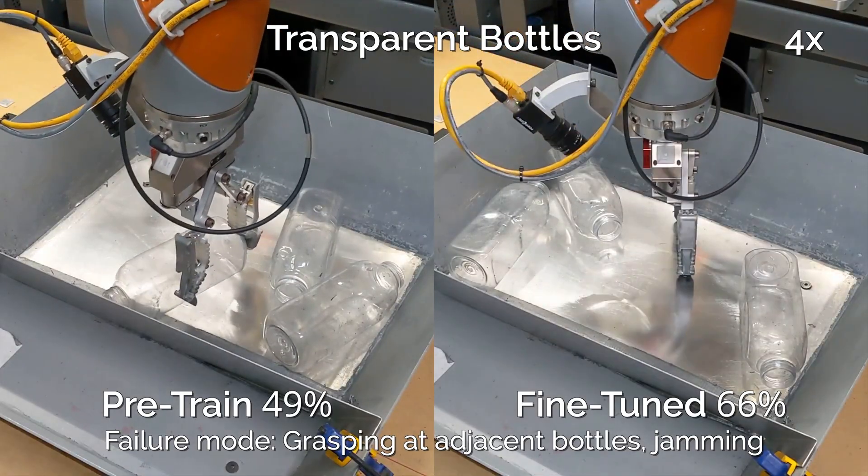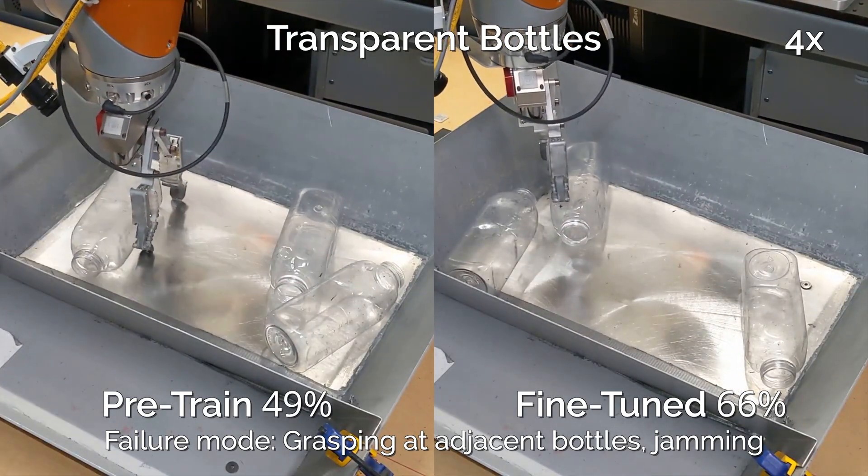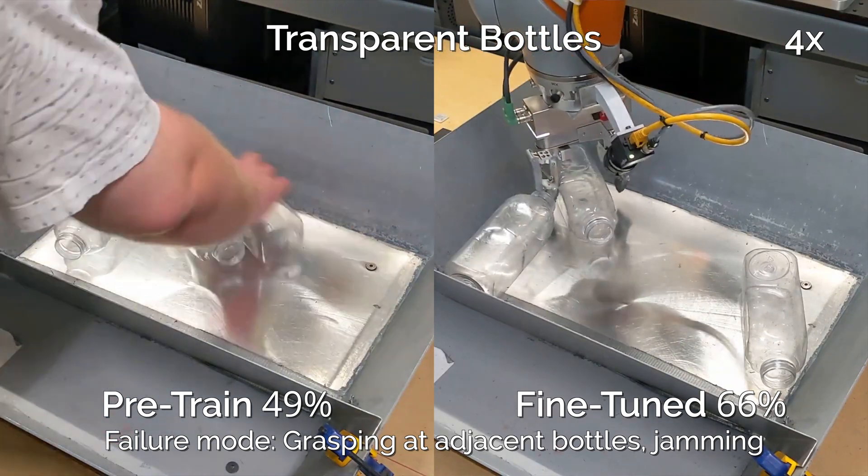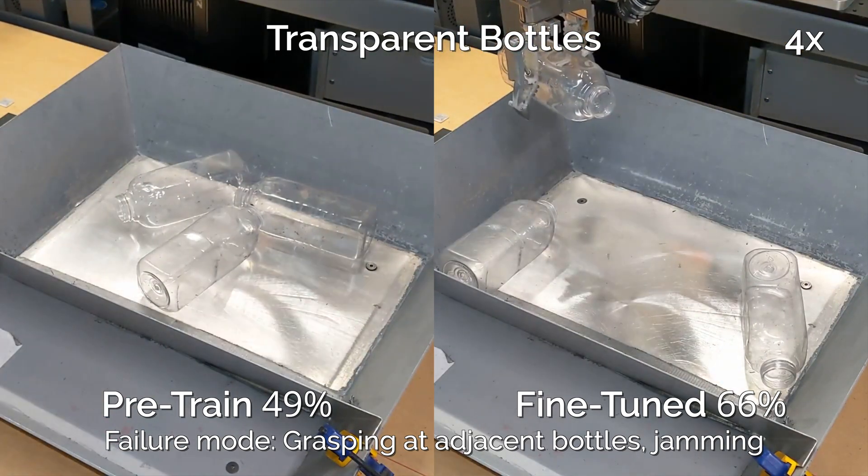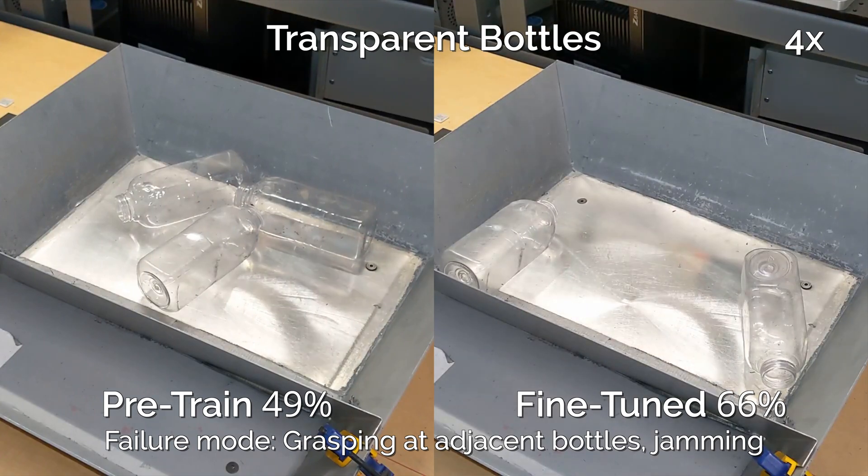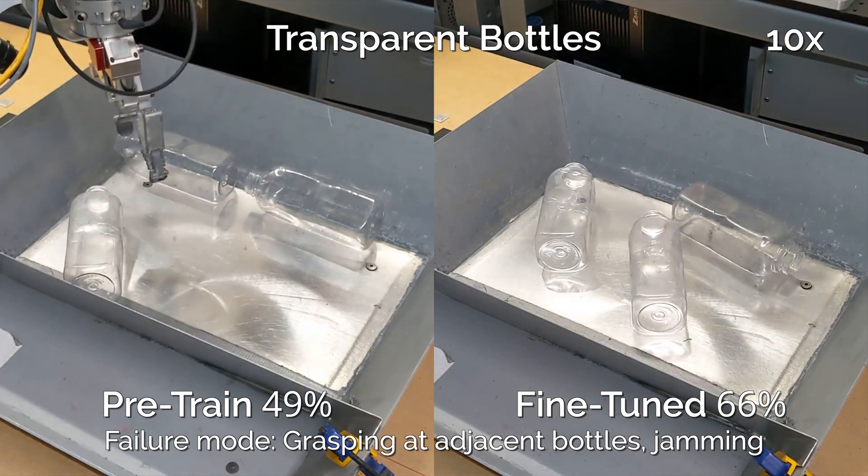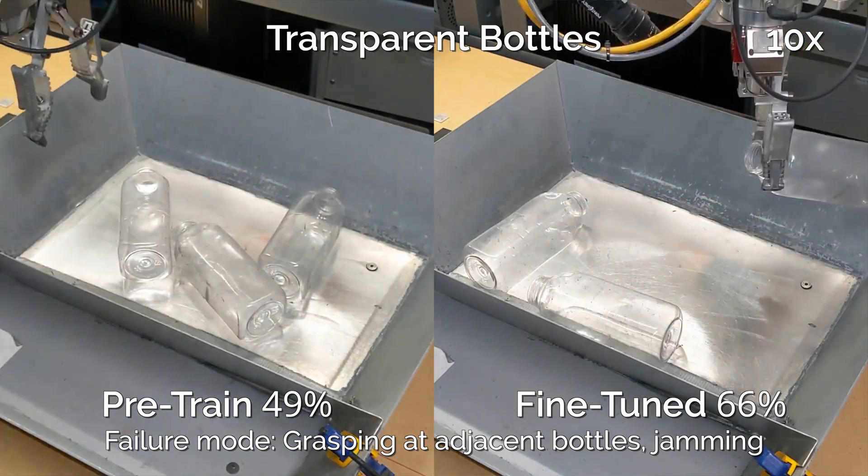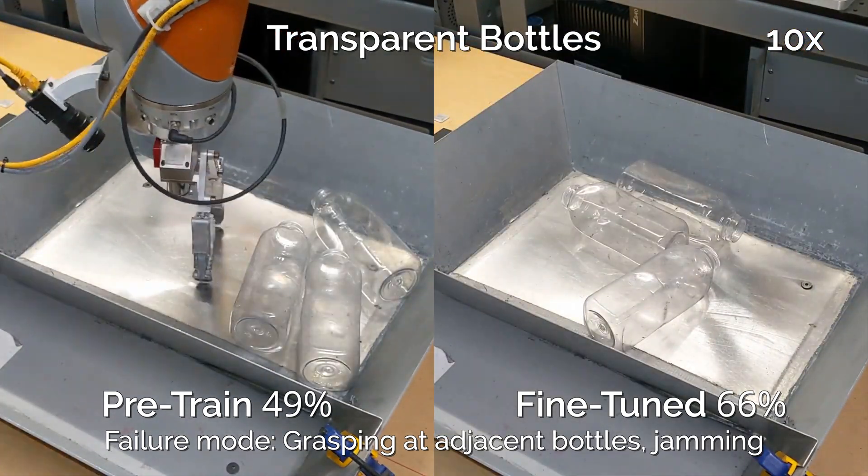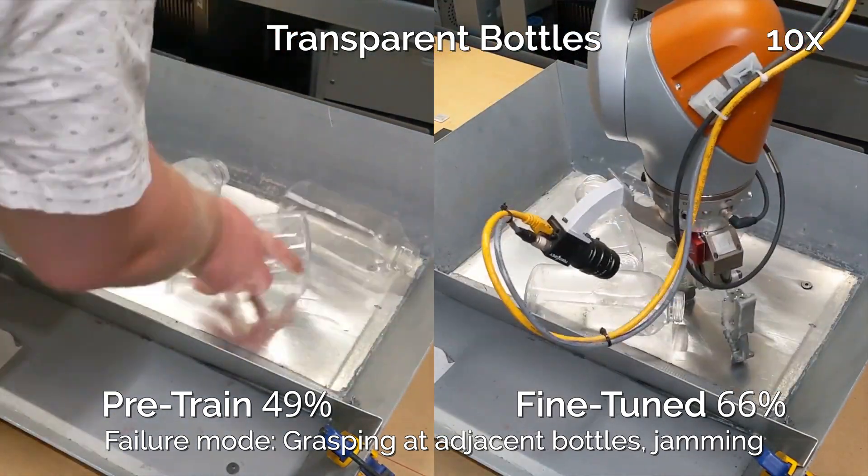Next, we adapt to difficult unseen objects, in this case, transparent bottles. Transparent objects are challenging for grasping systems because they are difficult for both visual and depth cameras to see. Though the fine-tuned policy on the right isn't perfect, it suffers from far fewer failures due to jamming or grasping of bottle edges than its untuned counterpart on the left.